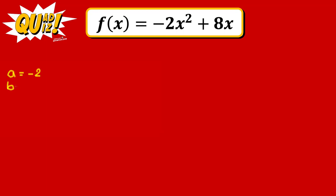Our b is the coefficient of x — in this case, we have 8. And our constant c, since we don't have a constant term here, we can simply say 0. With these coefficients, we can determine the vertex without a lot of difficult computation, and we can also determine the concavity with one of the three coefficients.